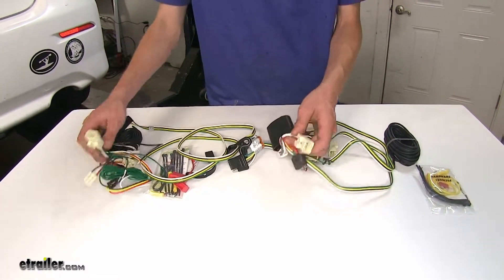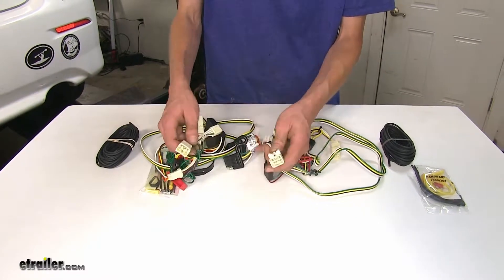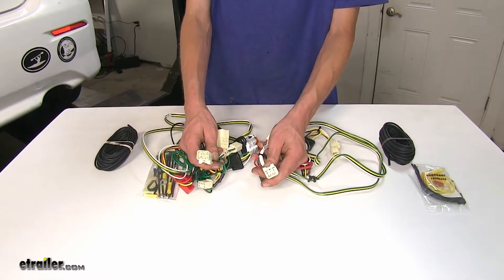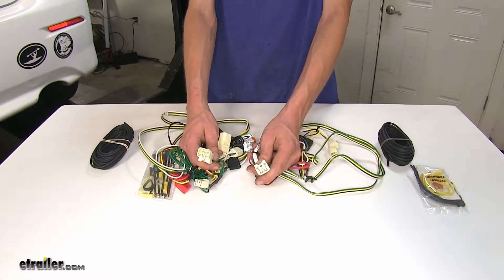Both of them are going to install in the same manner using T-connectors that go in line with the vehicle's existing tail light wiring, so there's no cutting or splicing required.